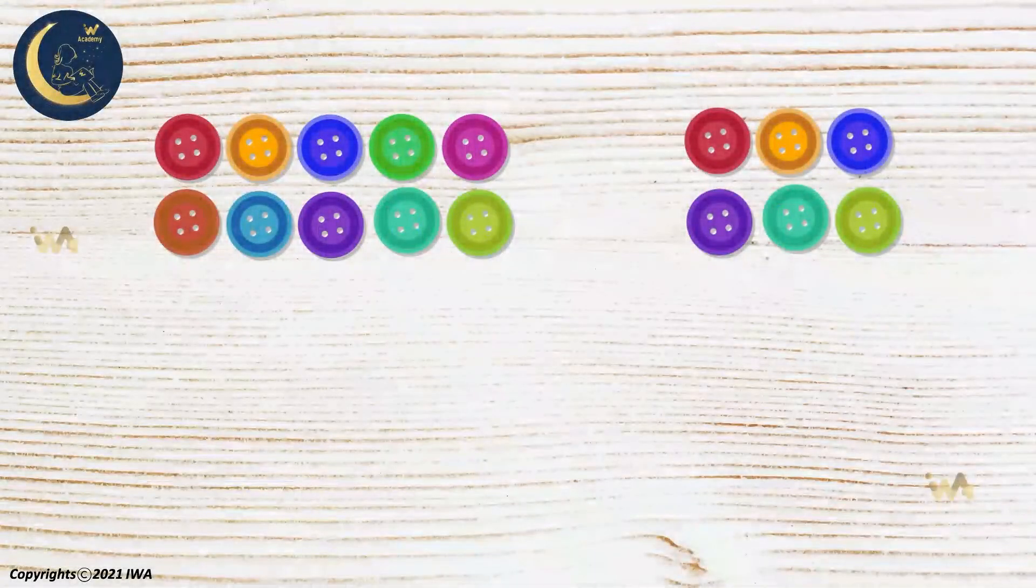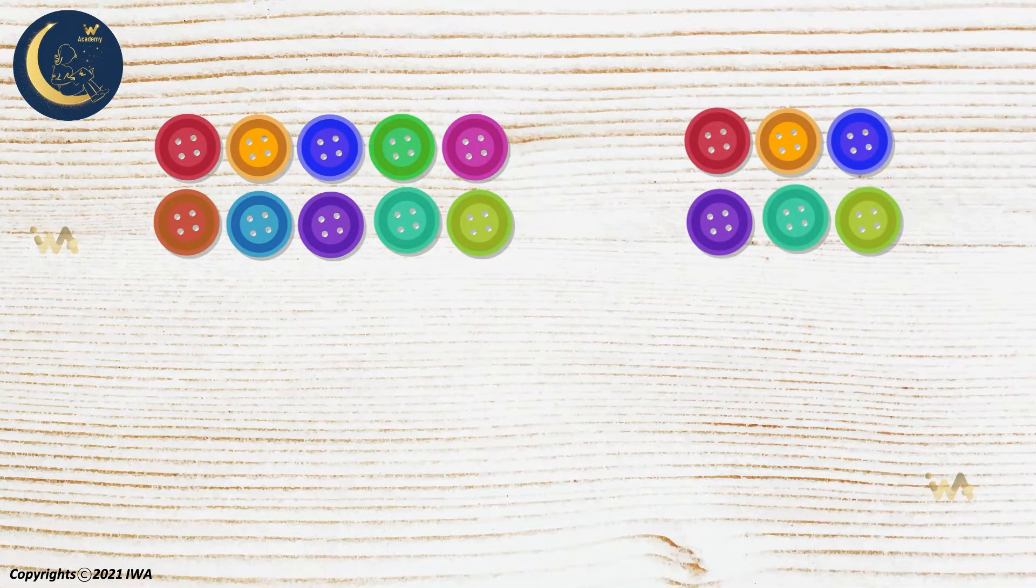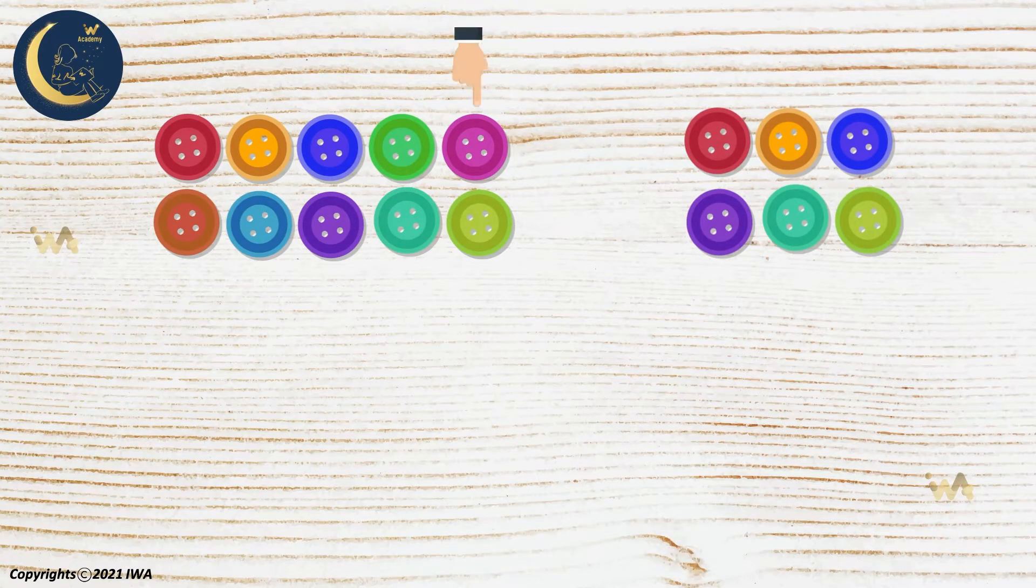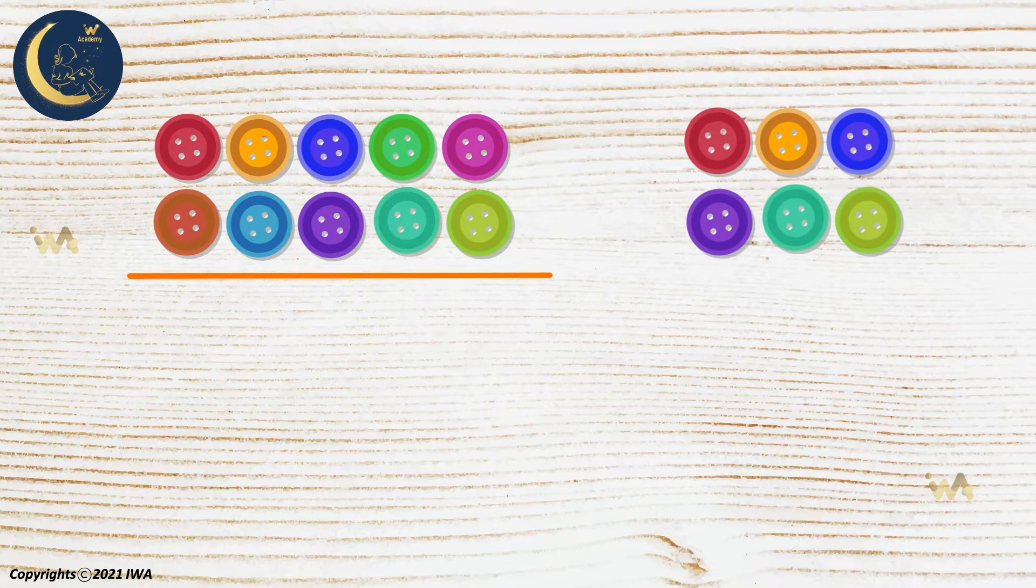Now we will do it again to find the number of buttons. How many tens are there? Let's see. 1, 2, 3, 4, 5, 6, 7, 8, 9, 10. Here we have 1 ten.